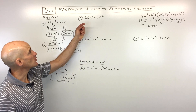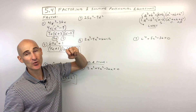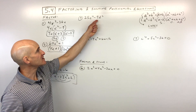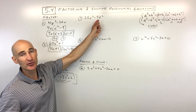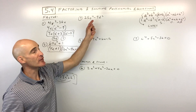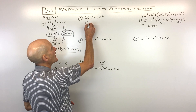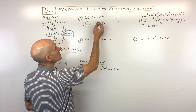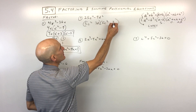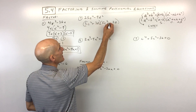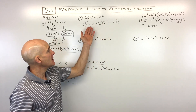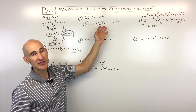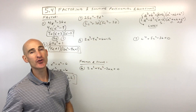Practice problem 4: factor 25c to the fourth minus 9d squared. There's no GCF, but it's a difference of two perfect squares. The square root of 25c to the fourth is 5c squared, and the square root of 9d squared is 3d. Using the sum and difference pattern: 5c squared plus 3d times 5c squared minus 3d. You can check your work by using FOIL or the box method to multiply back and get the original.